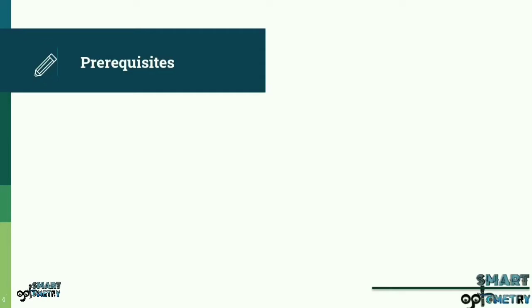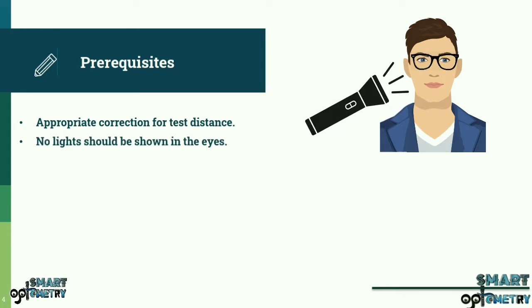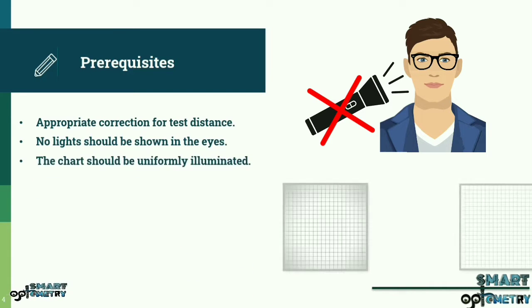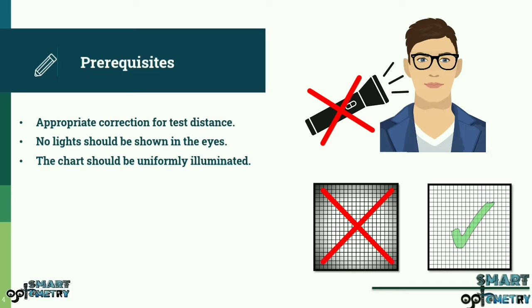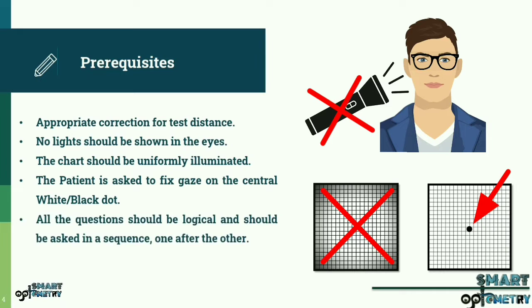Prerequisites. Before the test is administered, the patient should be wearing the appropriate correction for test distance. No lights should be shown in the eyes immediately before the test, and the pupils should remain normally constricted. The chart should be uniformly illuminated. The patient is asked to fix gaze on the central white or black dot and answer the clinician's questions during the test. All the questions should be logical and should be asked in a sequence, one after the other.